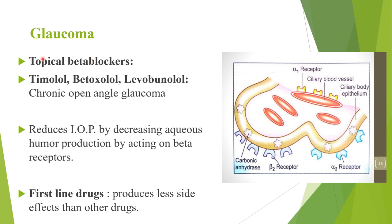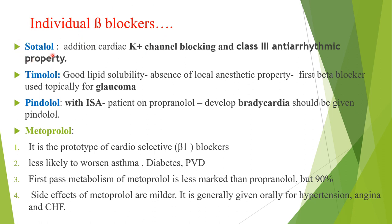In glaucoma, beta blockers are first-line drugs with fewer side effects. Used topically, timolol, betaxolol, and levobunolol are used in chronic open-angle glaucoma by reducing intraocular pressure through decreased aqueous humor formation. Sotalol has additional cardiac potassium channel blocking and class III antiarrhythmic properties. Esmolol has good lipid solubility and absence of local anesthetic property. Pindolol, with ISA, can be substituted in patients on propranolol developing bradycardia. Metoprolol is the prototype cardioselective beta-1 blocker, less likely to worsen asthma, diabetes, and peripheral vascular disease.